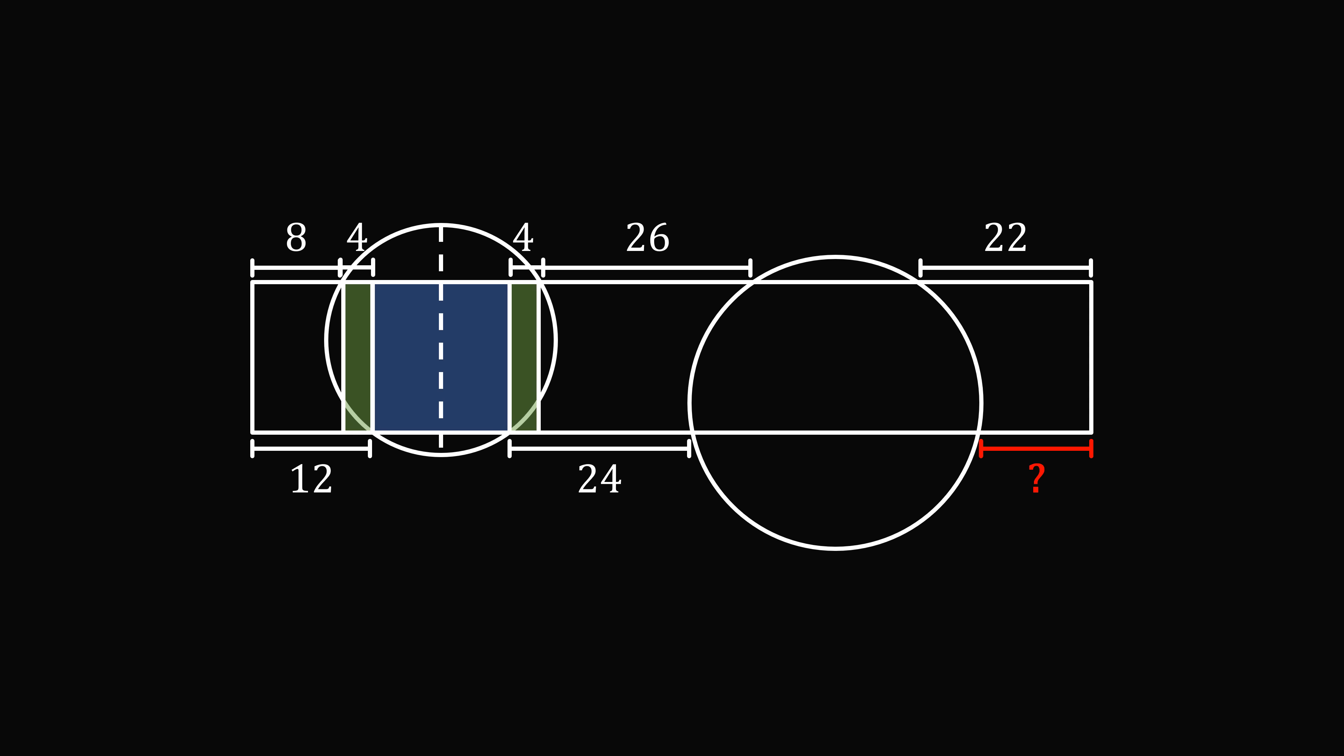So, on the bottom side, we can bring down this 24. So, we have a length of 4, and the remaining length will be 24 minus 4, which equals 20.